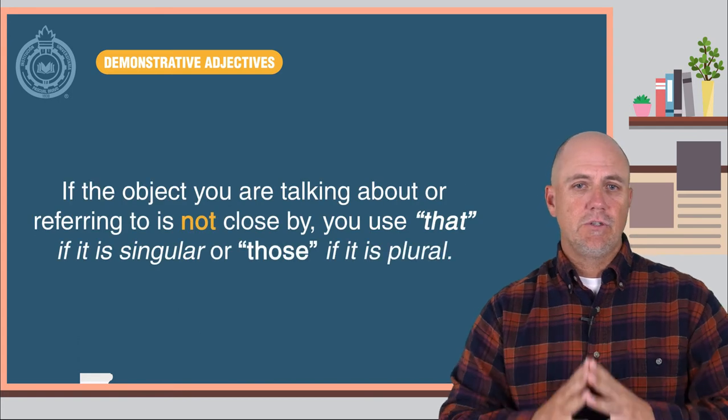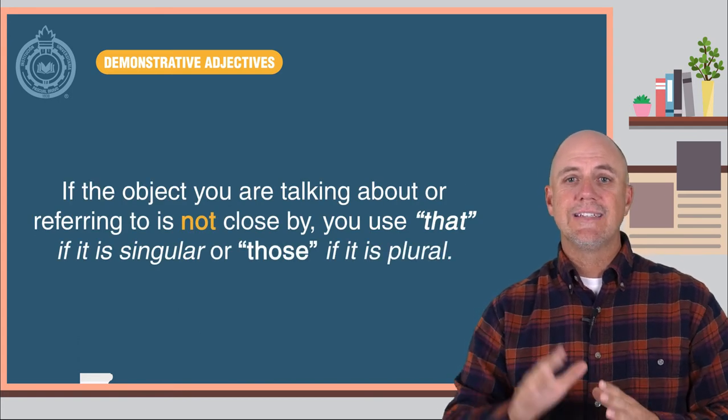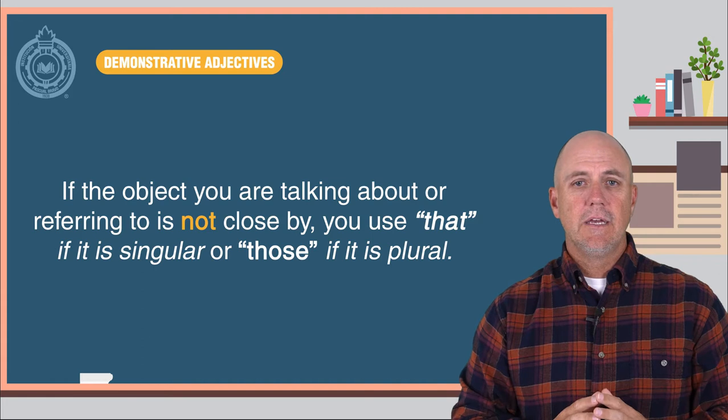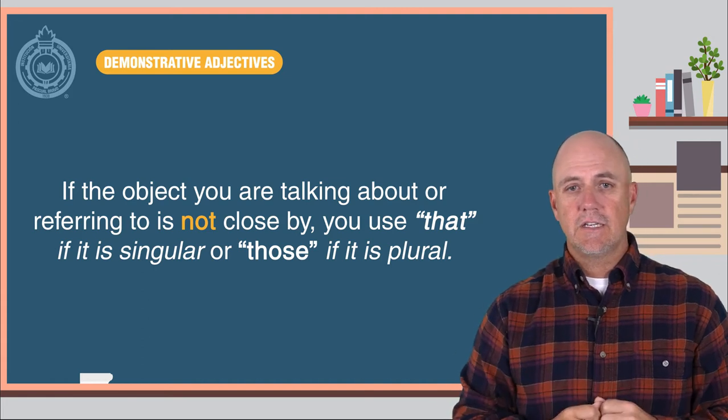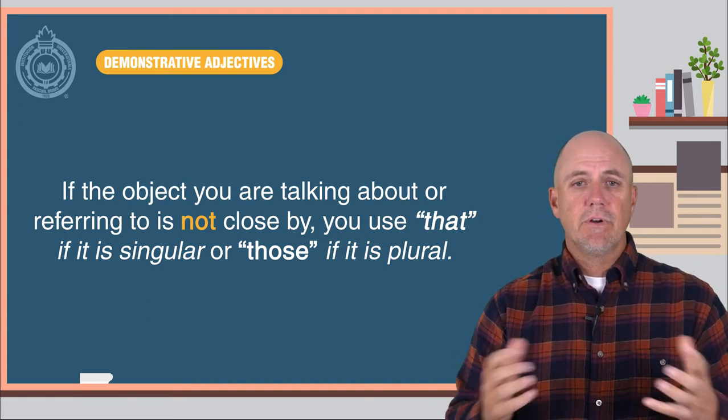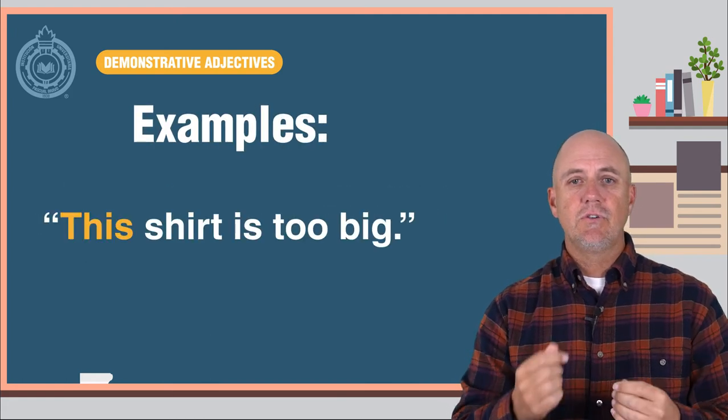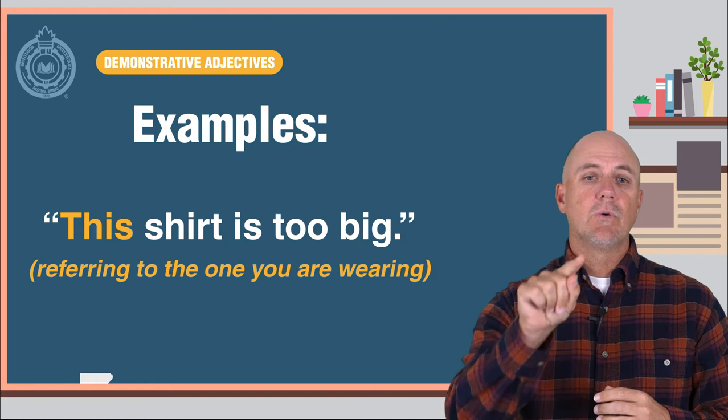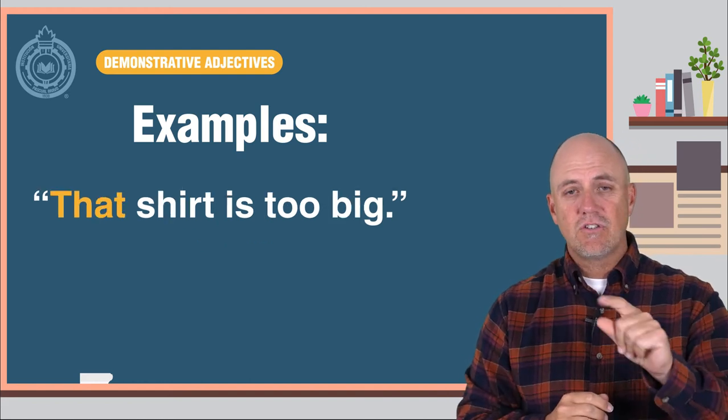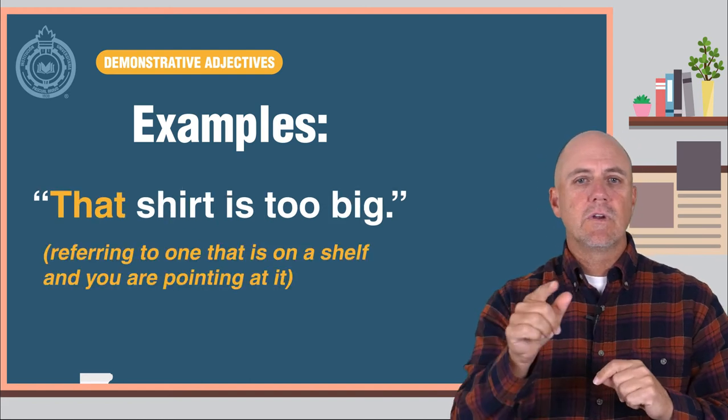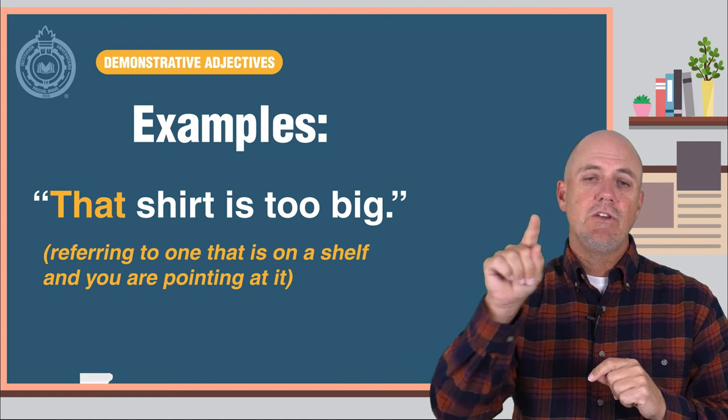Here are some examples. This shirt is too big, referring to the one that you are wearing. That shirt is too big, referring to one that is still on the shelf and you are pointing at.